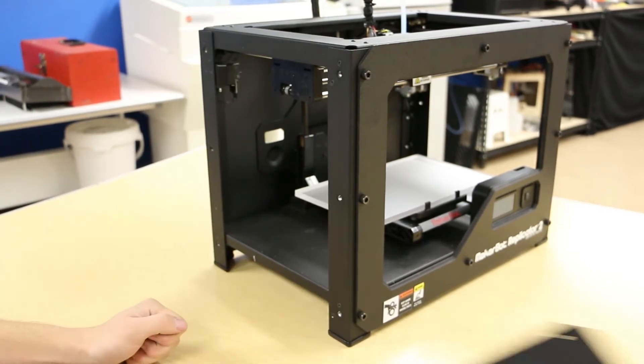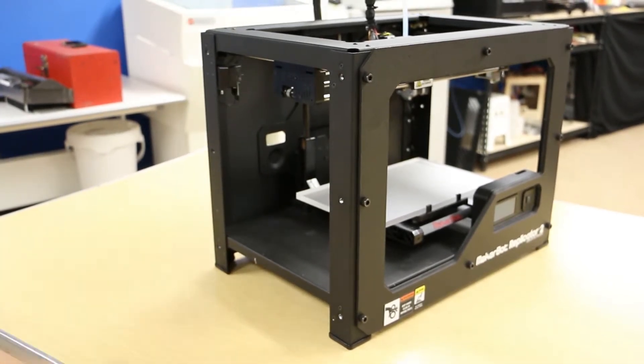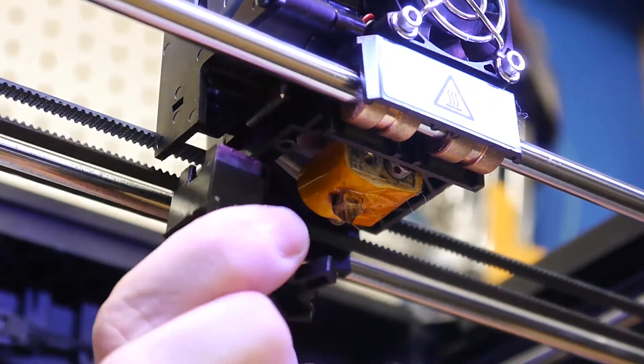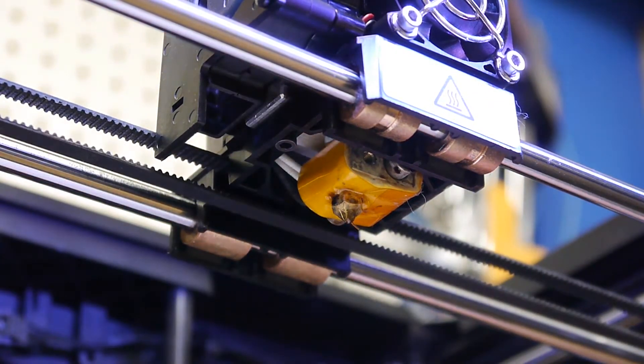After removing the side panels, we will remove the extruder assembly. Remove the blower duct. Sometimes this will just pop right out, other times you may have to hinge it to the side.